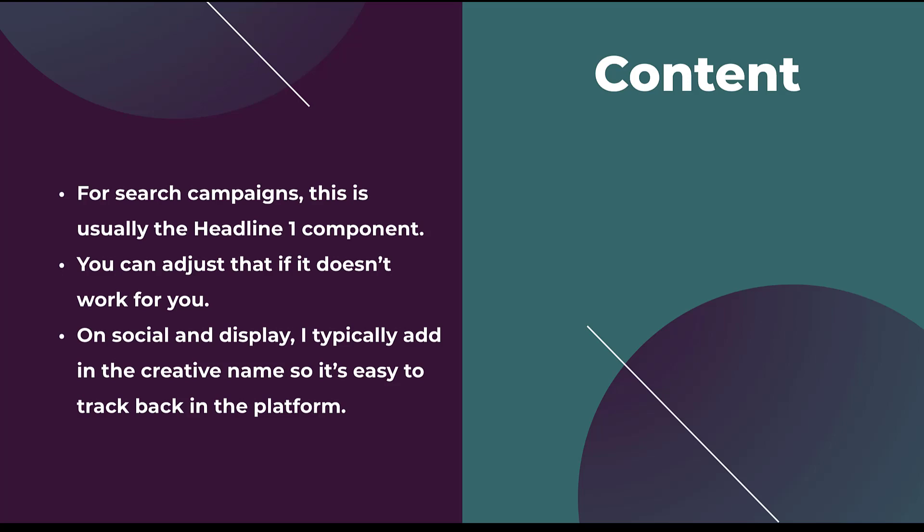Lastly, we have Content — which for search campaigns by default is typically the H1 or headline one component of your ads. I like to keep things pretty similar, so for search I will still stick with whatever that headline one component was, because it's really difficult to make the report say anything different other than utilizing ad ID, which is just a big ugly number that's hard to tie back to anything. On social or display, I'll nearly always use whatever the creative name is — whenever you create a display ad or a social ad, you're allowed to give it a name, and I'll use that to make sure I can tie it back to performance.